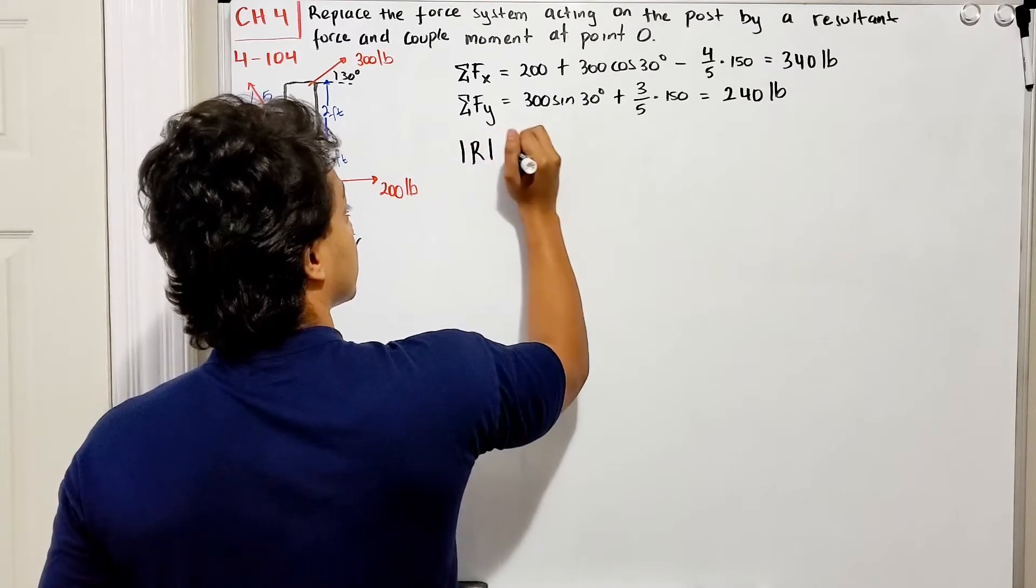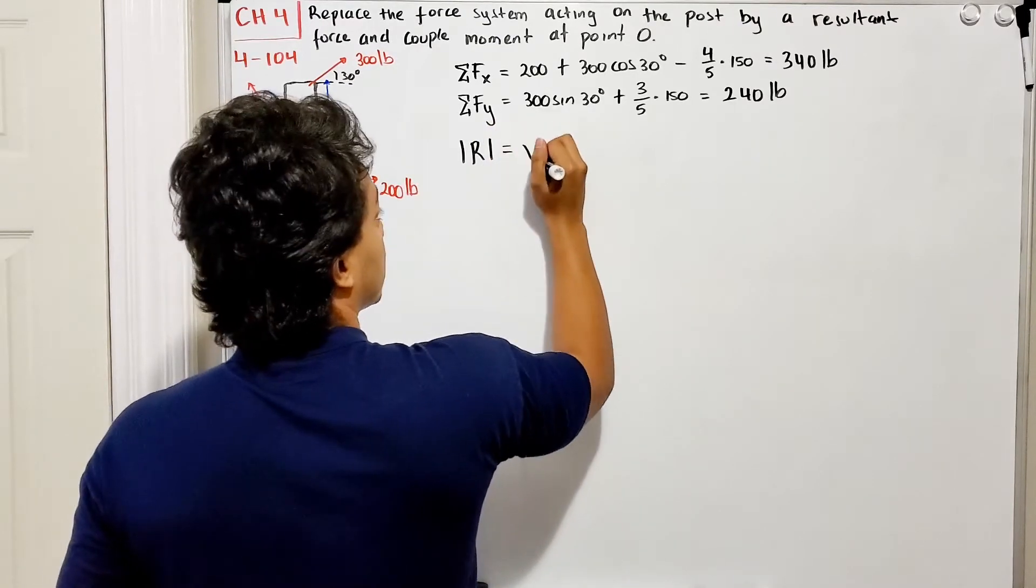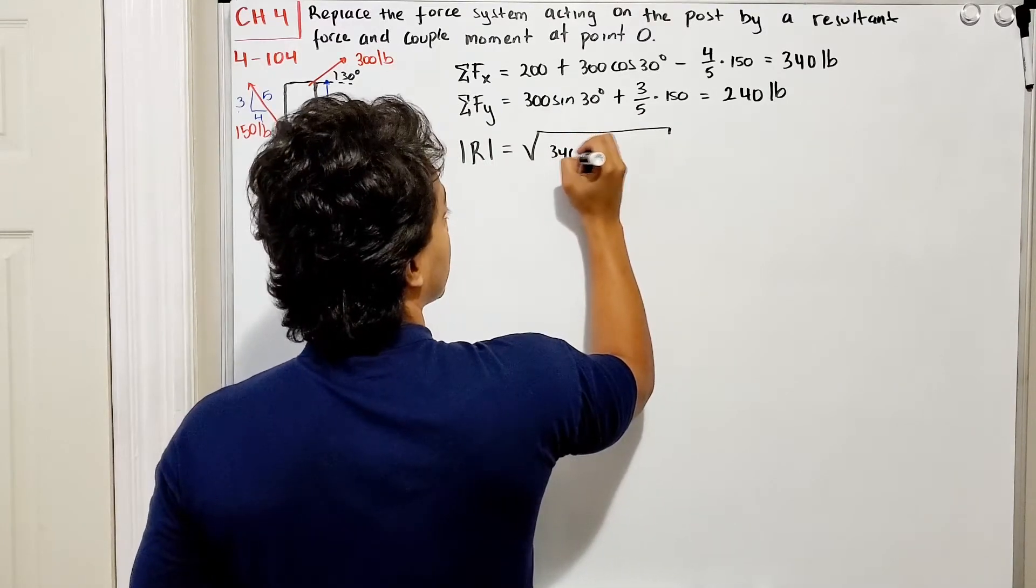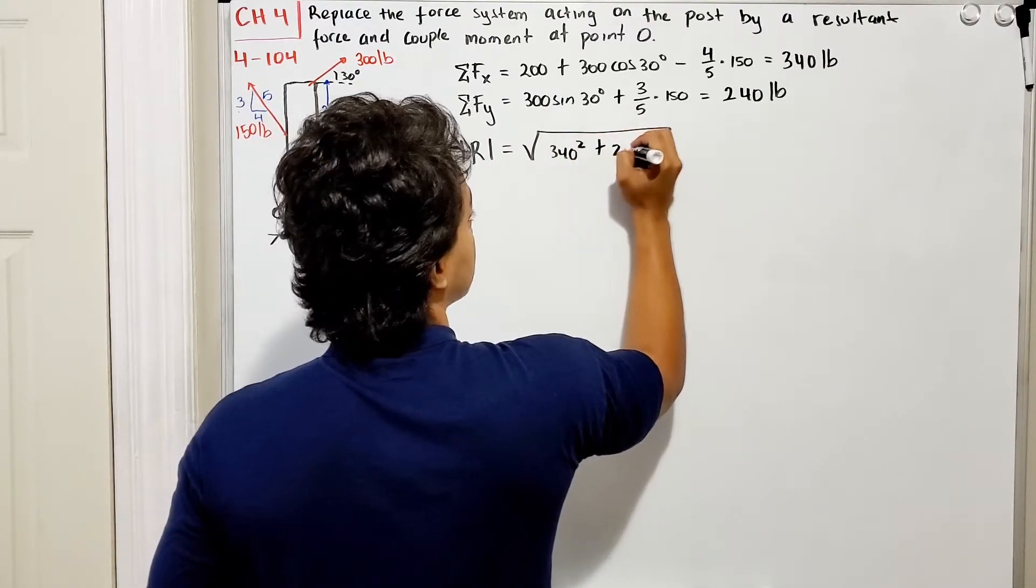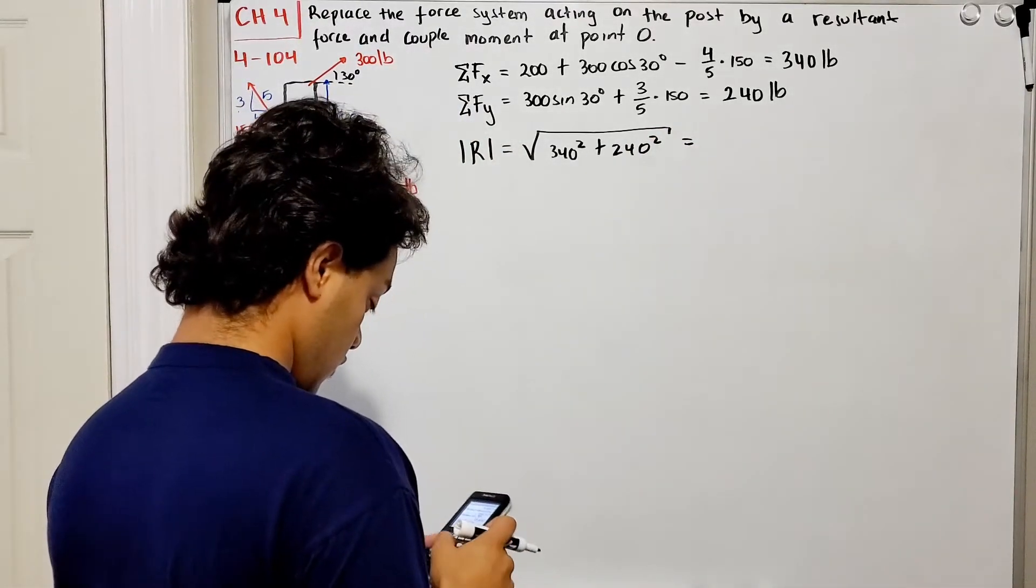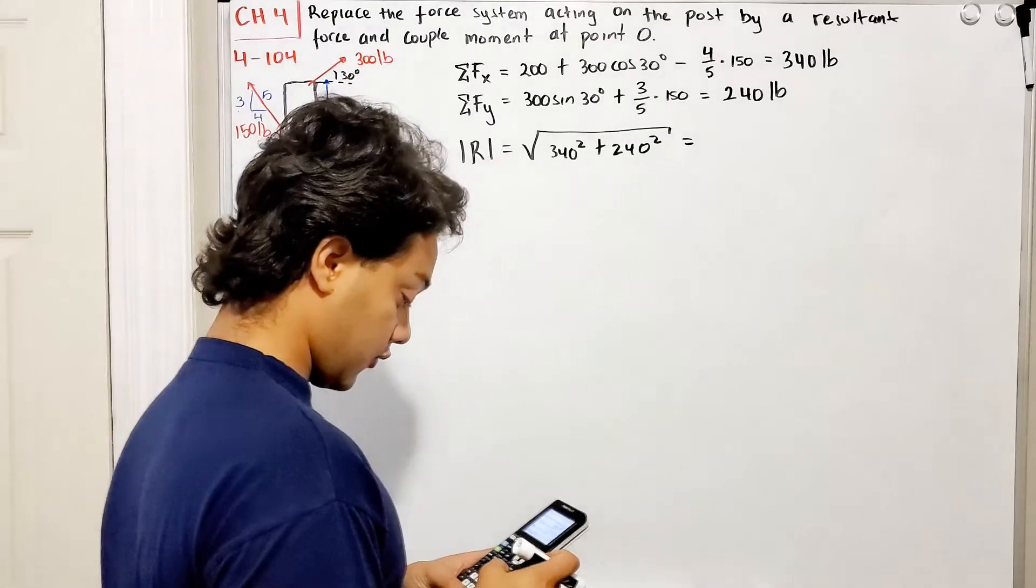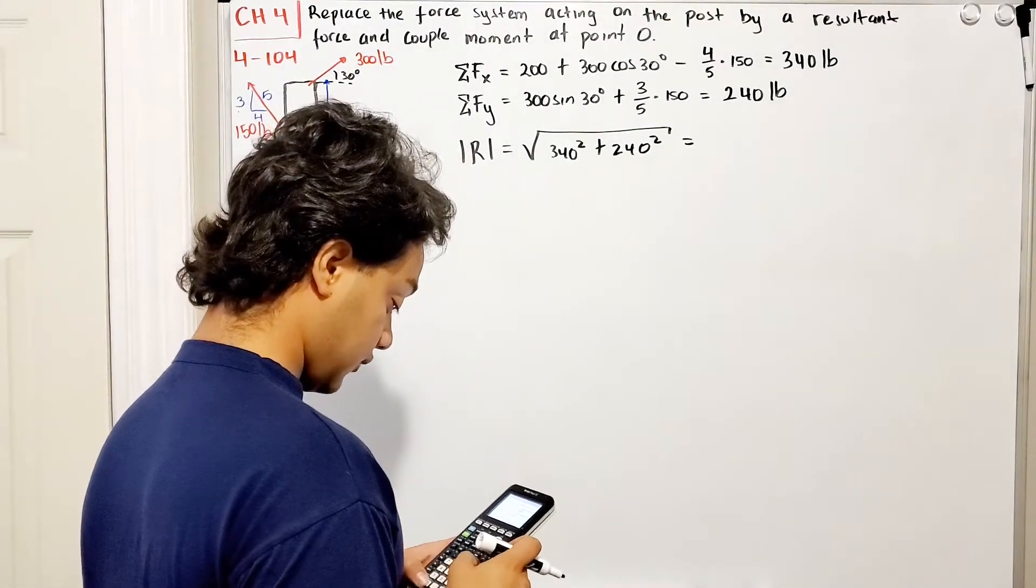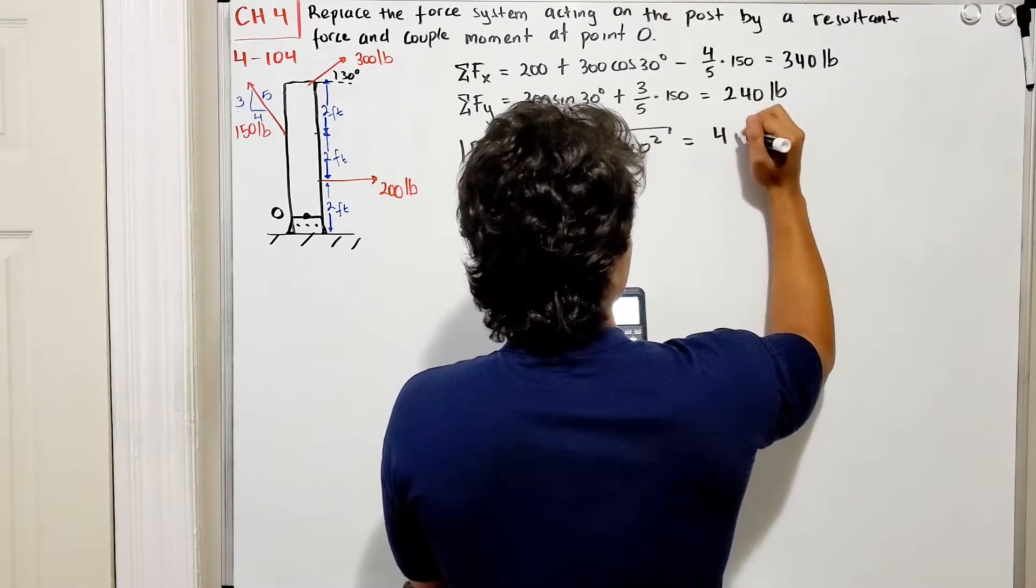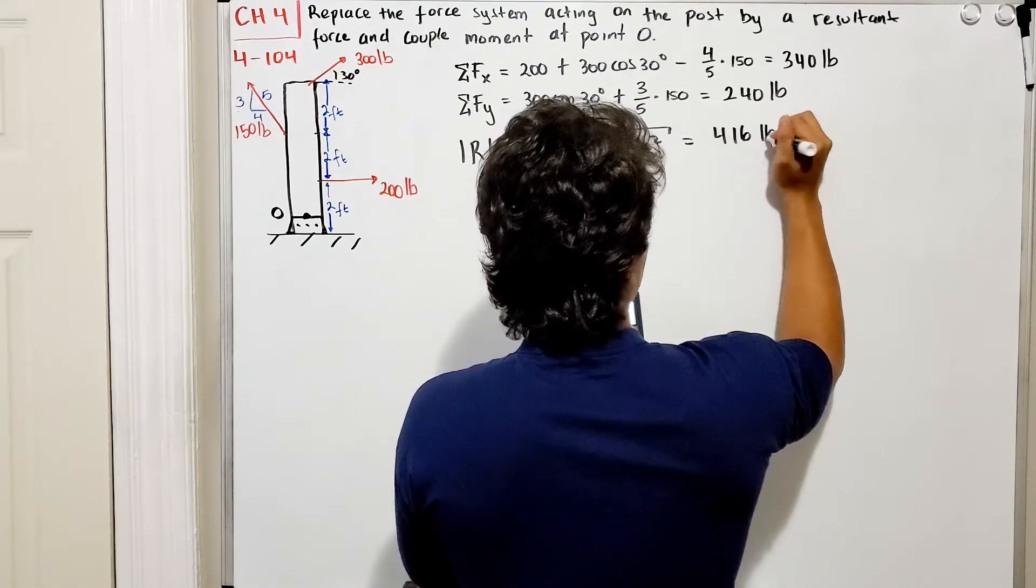If we find the magnitude of the resultant force, it will be equal to the square root of 340 squared plus 240 squared. We do the square root of 340 squared plus 240 squared, and this gives me 416 pounds.